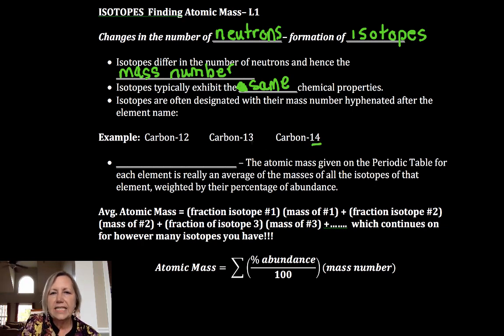Now, they're often designated, especially if they're neutral and we don't need a charge, with a hyphen after the name. You notice these are whole numbers, and that assumes that the mass of a proton is equal to the mass of a neutron.